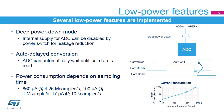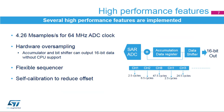For low sampling rates, the current consumption is reduced almost proportionally. The ADC supports up to 4.27 megasamples per second of conversion.